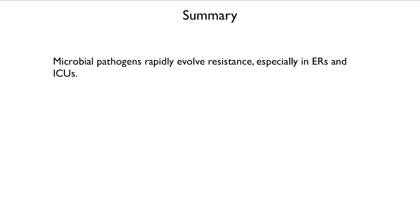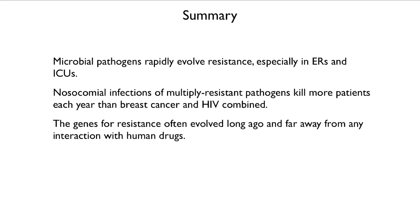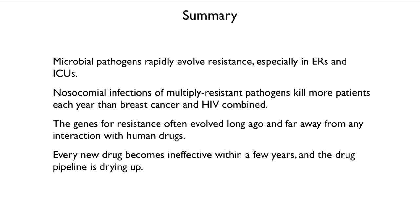To summarize: microbial pathogens rapidly evolve resistance, especially in emergency rooms and intensive care units. Nosocomial infections — that is, infections acquired in the hospital that the patient didn't have when they went in — of a multiply-resistant pathogen are currently killing more patients each year than breast cancer and HIV combined in the United States. The genes for resistance often evolved a long time ago and far away from any interaction with human beings, and there is a vast library of information on bacterial resistance out there in the soil. Every new drug becomes ineffective within a few years, and the drug discovery pipeline is drying up. So evolution-proof therapies offer some hope, and we're going to take a look at them.